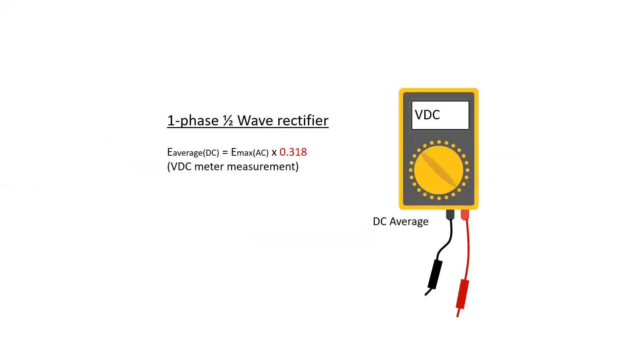For single-phase half-wave rectified systems, the E max of the AC system multiplied by 0.318 would then equal the E average or DC voltage measured.